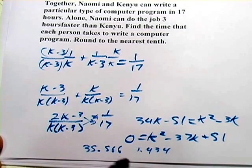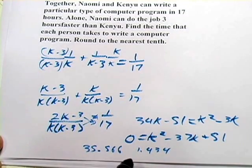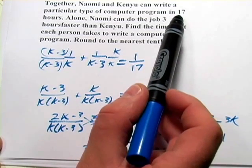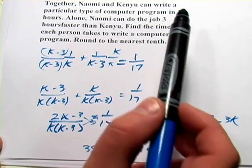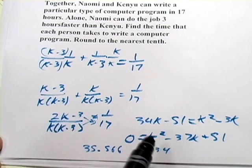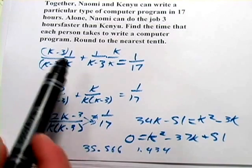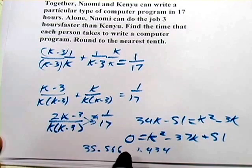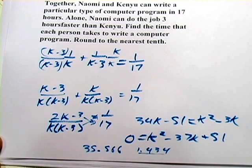Now at this point, you have to use your common sense to say which one of these looks right. And if you go back to the problem, you'll notice that when they work together, it takes them 17 hours to finish the job. K represents how long it just takes one of them, Kenyu, to finish the job. So it's probably not going to be an hour and a little less than a half. It's probably going to be 35 hours. So that's the correct answer for Kenyu.